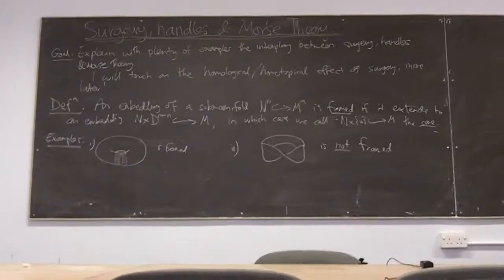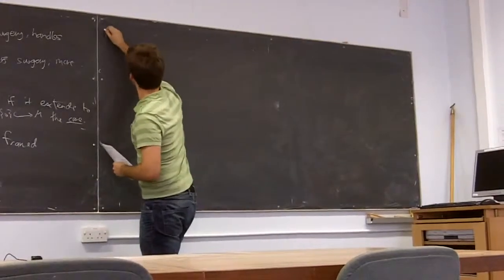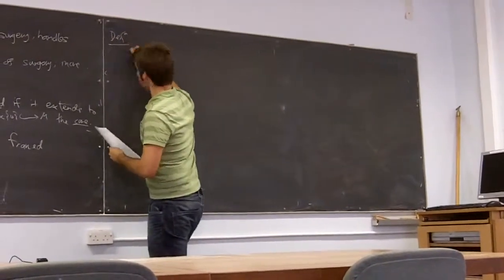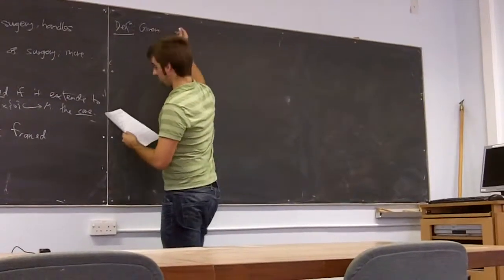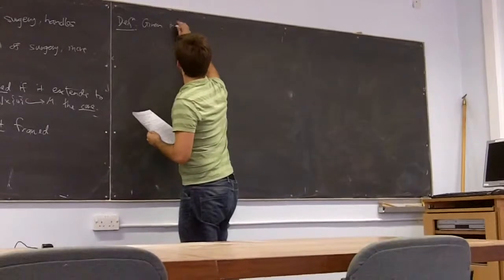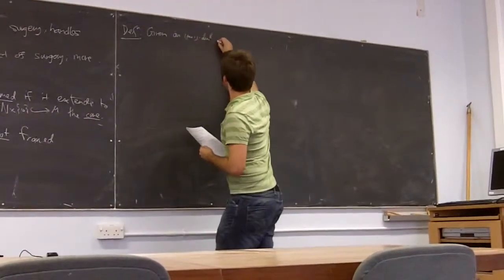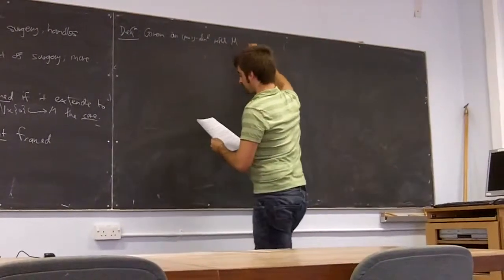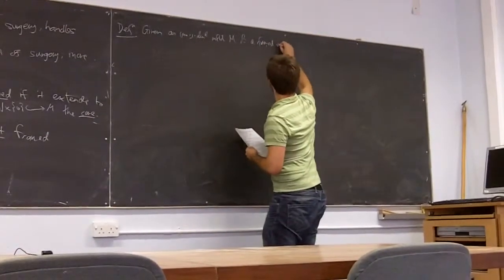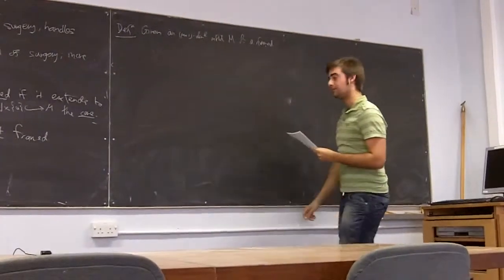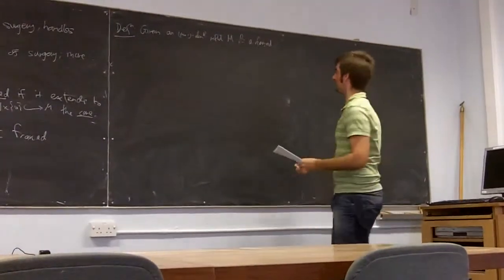Next, I will explain what I mean by attaching a handle. Given a framed embedding of a sphere, we have an (m+1)-dimensional manifold W, and a framed embedding. I'm going to call a framed embedding of a sphere a framed i-embedding, where the sphere is of dimension i.